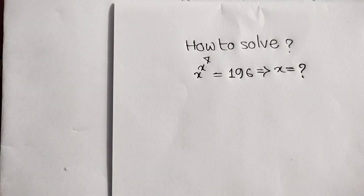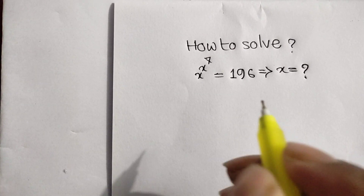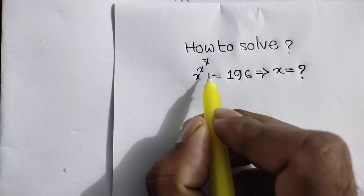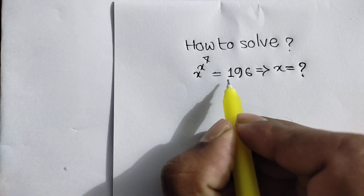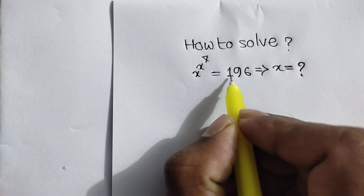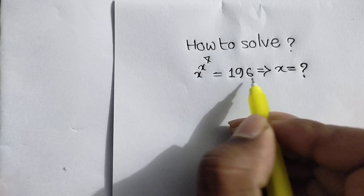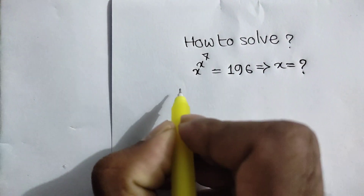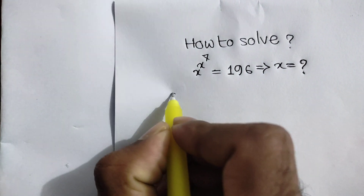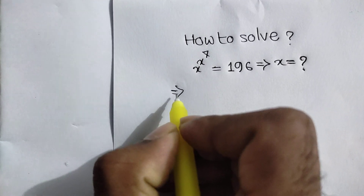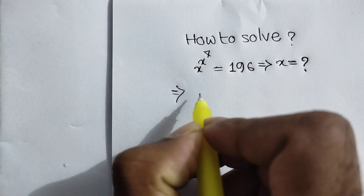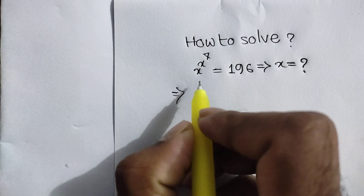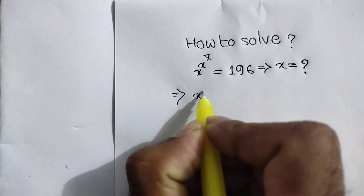Hi everyone, can you solve this problem: x to the power x to the power 7 is equal to 196. What is the value of x? First, on both sides we can apply the power 7.